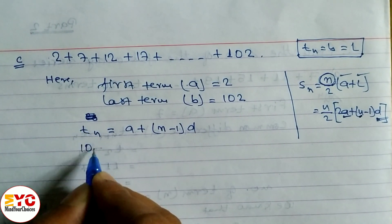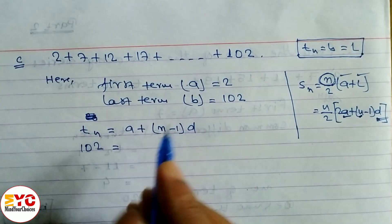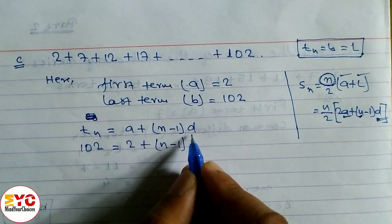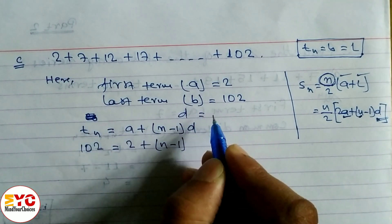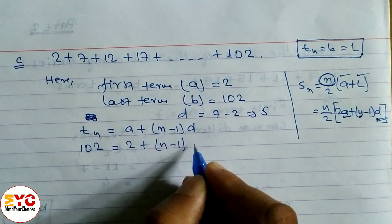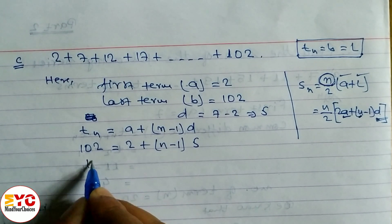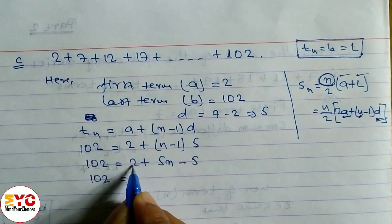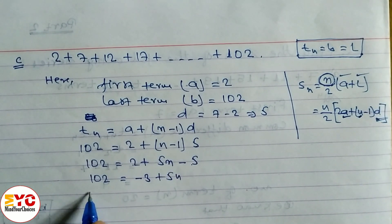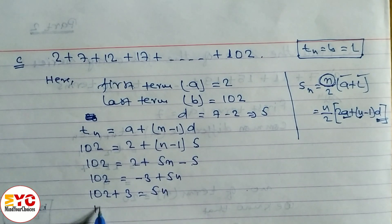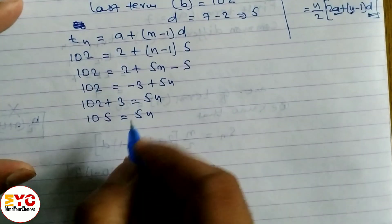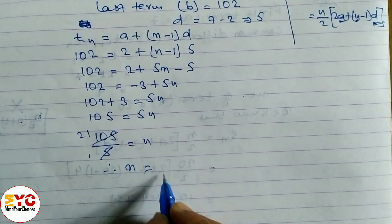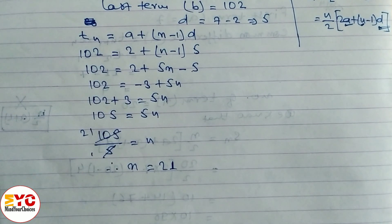Solving: 102 = 2 + 5n − 5, which gives 102 = −3 + 5n. Then 102 + 3 = 5n, so 105 = 5n. Therefore n = 105/5 = 21. Number of terms n = 21.